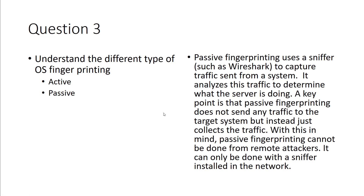Different types of fingerprinting for OS: understand that active is active and passive is more passive. Active means you're actively trying to engage the operating system directly. Passive will use a sniffer like Wireshark to capture traffic, and you'd analyze that traffic to determine the operating system. With passive, you're not actively looking at the OS — you're gauging it from captured packets. A passive fingerprint cannot be done remotely; it has to be done on the same wire.